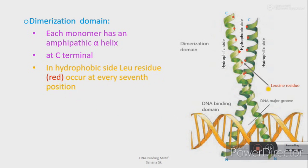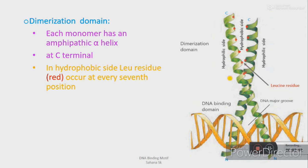They line up side by side in the alpha helix of each monomer, thus together they form a coiled coil. Now a question might pop up in your head: why zipper? Why did they name this motif as zipper? Initially researchers thought leucine residues interdigitated, that they remain interlocked like the fingers in a clasped hand, hence they named it as zipper, leucine zipper.